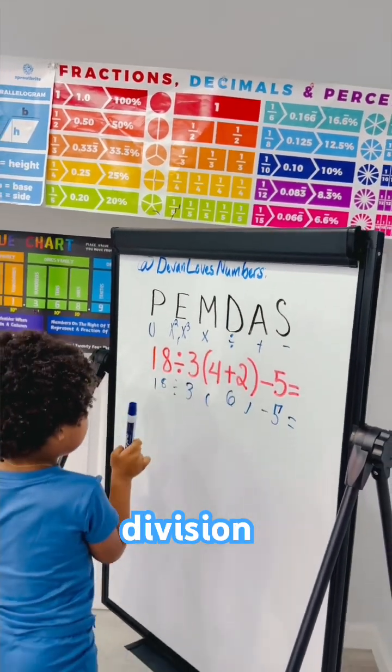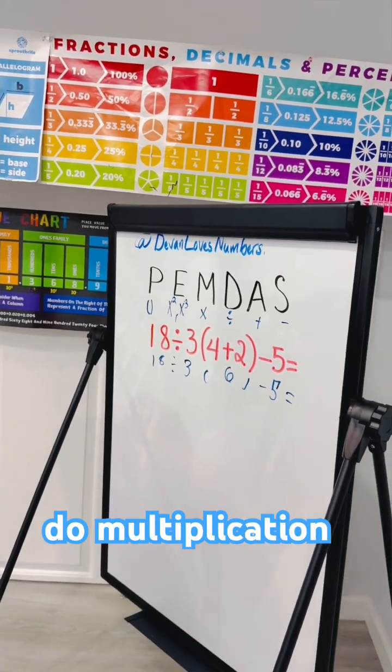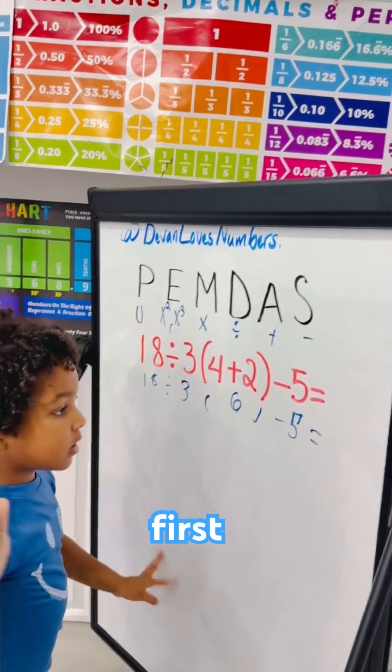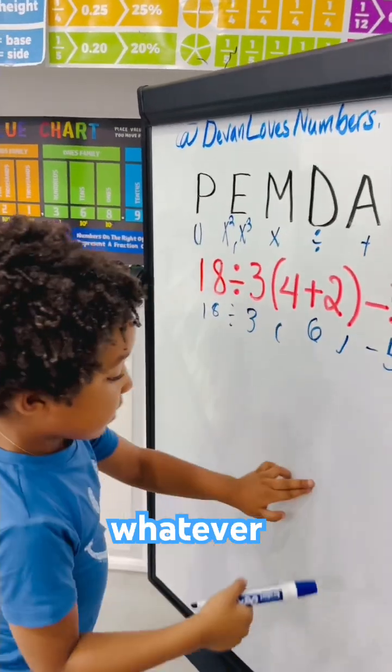Division. Hold up. So why do you do division first? Don't you supposed to do multiplication first? Whatever comes first. Oh, whatever. Okay. Whatever comes first goes.